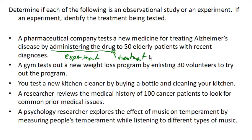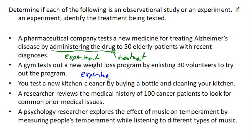Suppose a gym tests out a new weight loss program by enlisting 30 volunteers to try out the program. This is again an experiment because we are subjecting people to a treatment. In this case, the treatment is the program that these volunteers are going to try out.